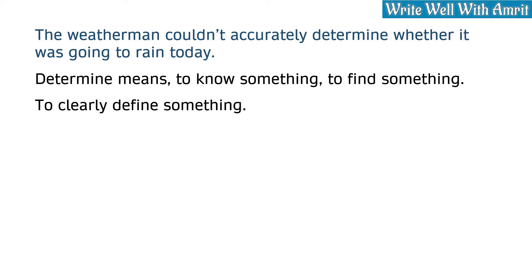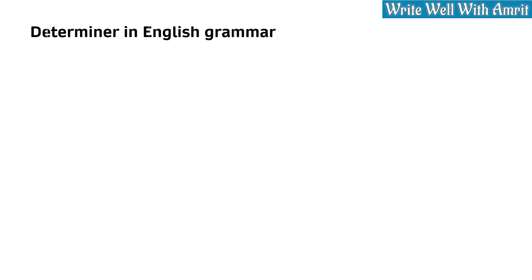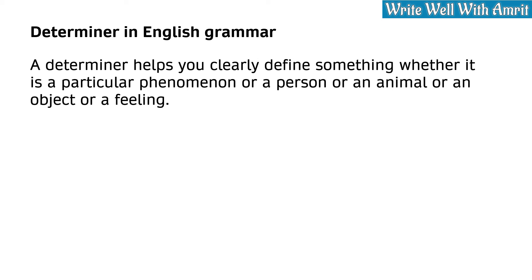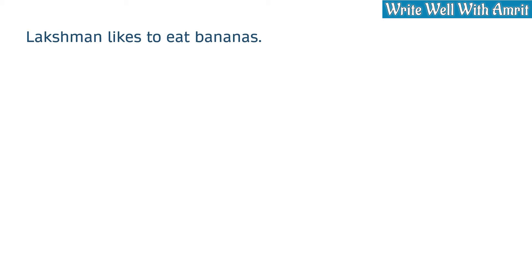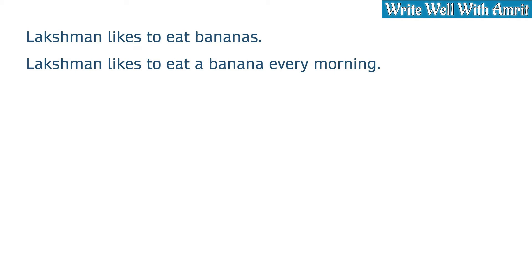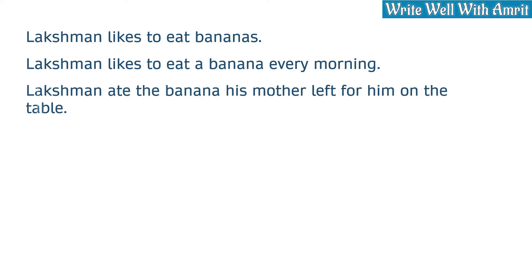With the meaning of determine cleared, let's now understand what determiners are. A determiner helps you clearly define something — whether it is a particular phenomenon, a person, an animal, an object, or a feeling. A determiner pinpoints something or quantifies it. Let's consider these examples: 'Lakshman likes to eat bananas.' 'Lakshman likes to eat a banana every morning.' 'Lakshman ate the banana his mother left for him on the table.'